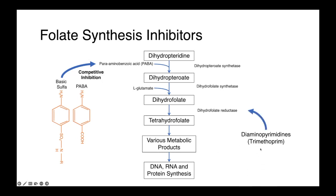Our diaminopyrimidines, so drugs like trimethoprim, act at a different step of the pathway and in a different manner. They actually directly inhibit dihydrofolate reductase, preventing the pathway from continuing at this stage.